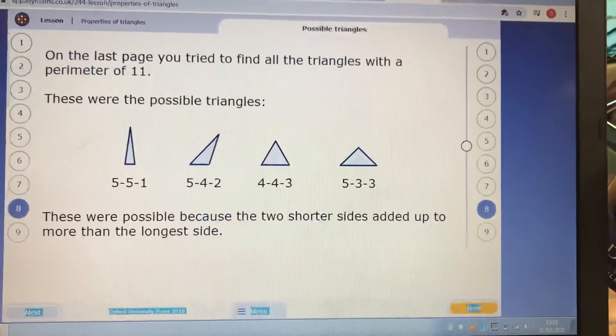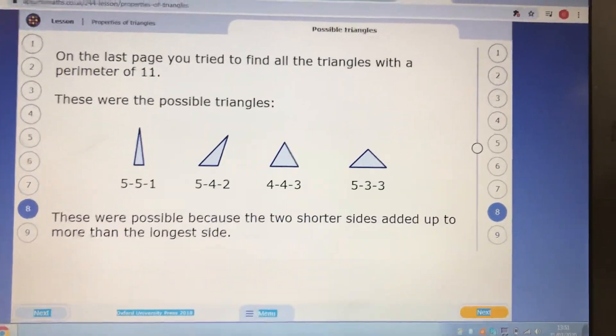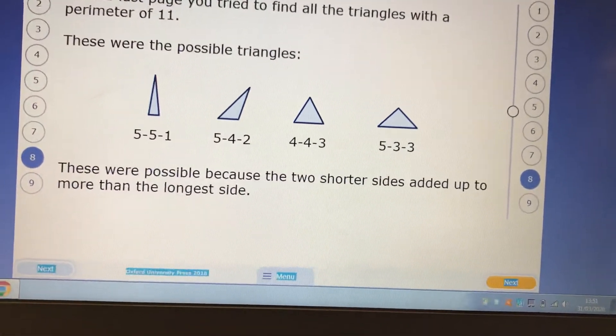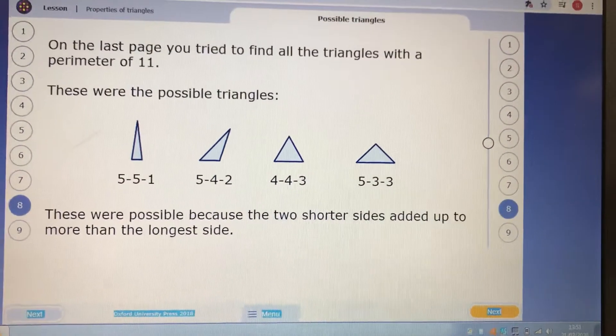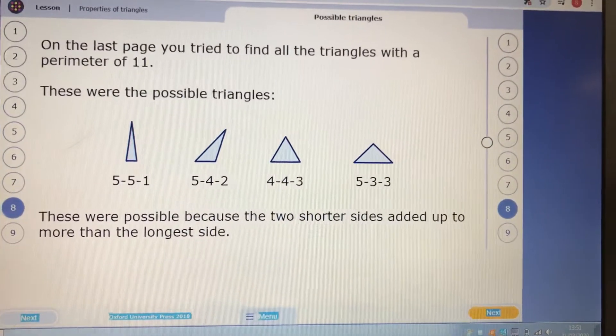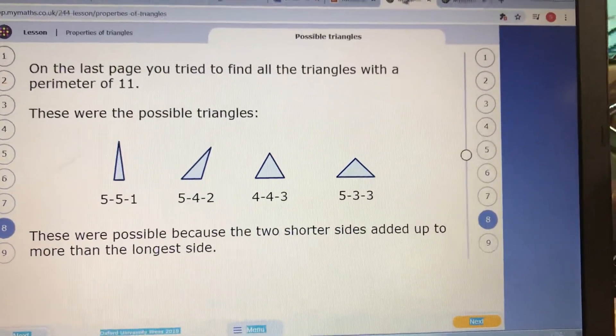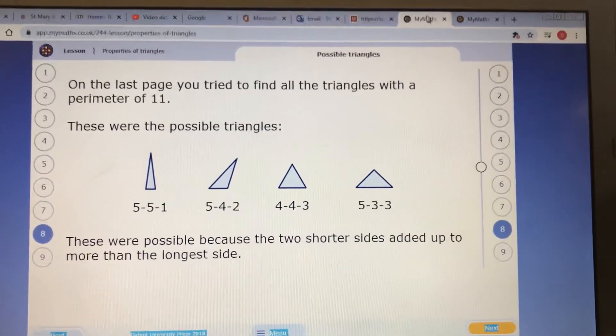What you have to do, you have to go and just check and read this carefully here. This is in the lesson. It talked about what perimeters were possible. These were possible because the two shorter sides add up to more than the longest side. So let's just think about that again.